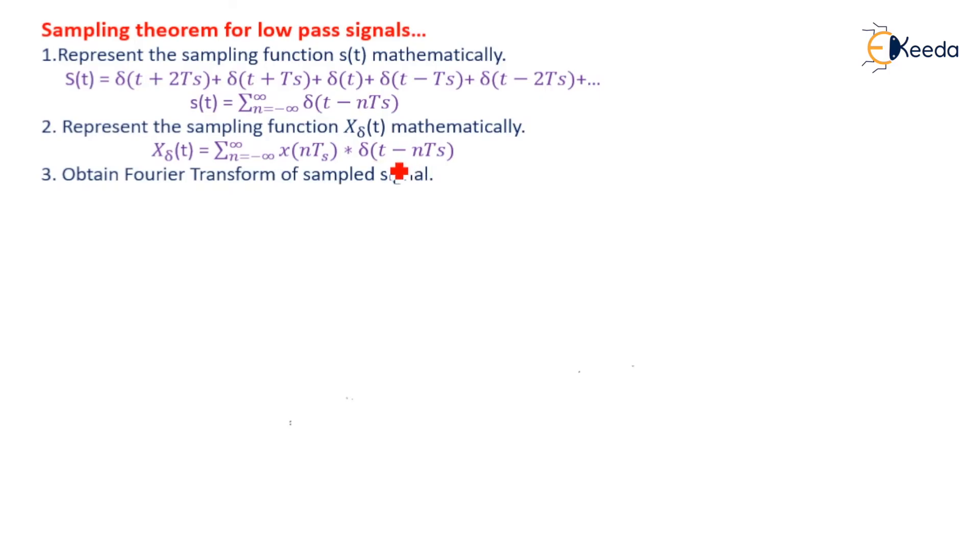The third step is getting the Fourier transform of sampled signal. This time signal is converted into the frequency domain x_δ(f). It is nothing but a sampled version. It is fs times summation of n equal to minus infinity to infinity x(f - nfs).